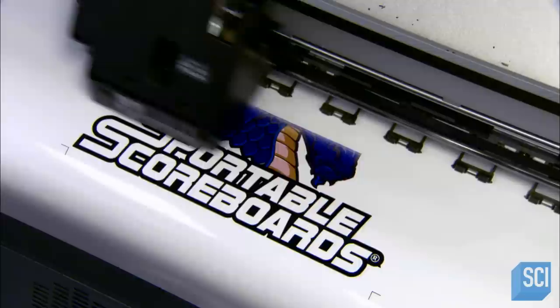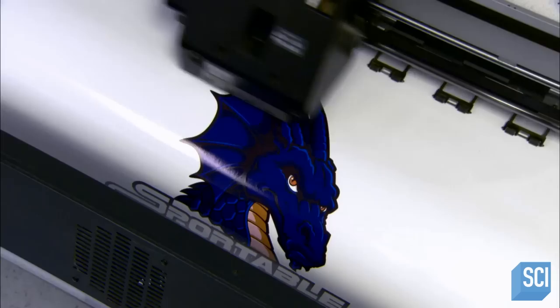An inkjet printer reproduces the company logo on adhesive-backed paper, followed by some fierce-looking team graphics. Later, a weatherproof coating will be applied to the paper graphics.